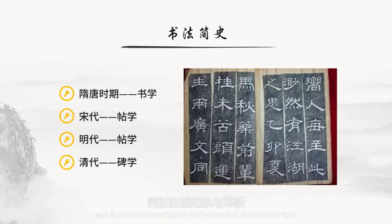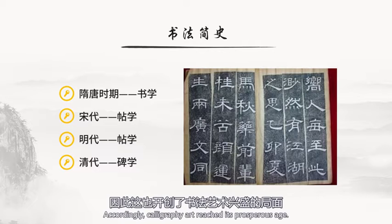明代同样继承了前代崇尚帖学的风格，而且明代历代皇帝都非常喜欢书法，因此书法艺术在这个时期也得到了一定的发展，明代的书体以楷书居多。清代的书法艺术与前几代都不同，与帖学相对，它崇尚碑学，指的是以两汉的碑版石刻为范本进行的书法创作。由于碑学追求朴质、刚健、豪放之美，同时注重继承与革新，因此开创了书法艺术兴盛的局面。